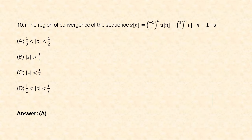Next question: the region of convergence of the sequence X(n) = (−1/3)^n · u(n) − (1/2)^n · u(−n−1) is: option A: |Z| ranges from 1/3 to 1/2, option B: |Z| > 1/3, option C: |Z| < 1/2, option D: |Z| ranges from 1/2 to 1/3. For the given sequence, the magnitude of Z should be greater than 1/3 and less than 1/2, so option A is correct.